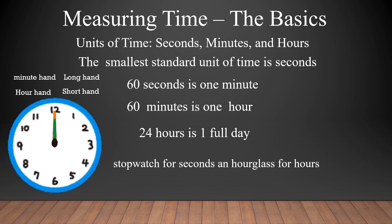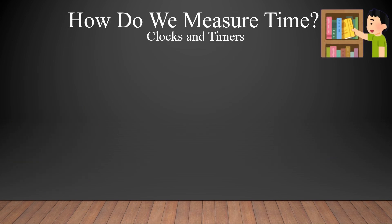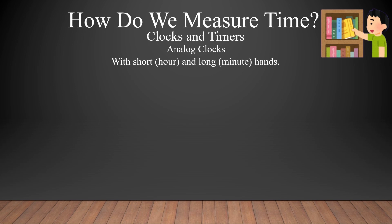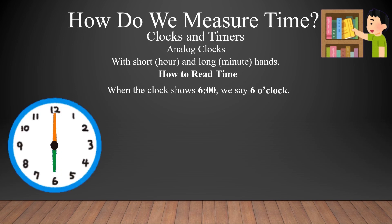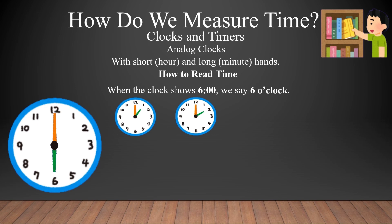A stopwatch is used for seconds, an hourglass for hours, and here is a timer. We use clocks and timers to measure time. Let us use an analog clock to understand how to read time with the short hand (hour hand) and the long hand (minute hand). When the short hand points to 6 and the long hand to 12, we say it is 6 o'clock. When the short hand points to 1 and long hand to 12, it is 1 o'clock. Similarly for 2 o'clock and 3 o'clock.